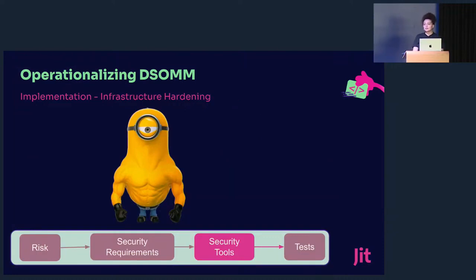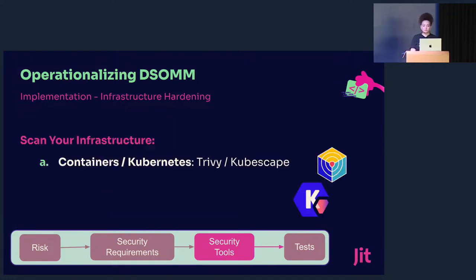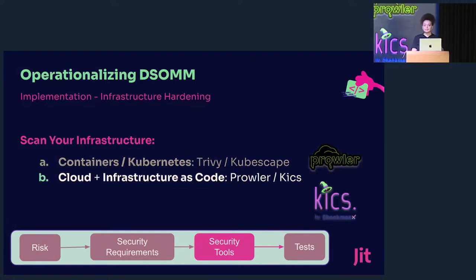There's one more sub-dimension I'm not going to talk about today, but it's worth mentioning: infrastructure hardening. I want to share some of the open source tools we utilize to achieve all the levels here. For container scanning and Kubernetes scanning, we're using Trivy and KubeScape. For cloud security and infrastructure as code, we're using Prowler for AWS, GCP, and Azure, and KICS for Pulumi, CloudFormation, AWS CDK, Terraform, and Serverless.